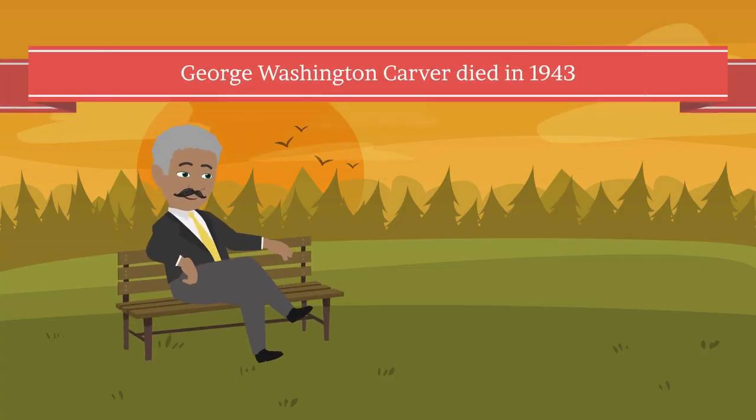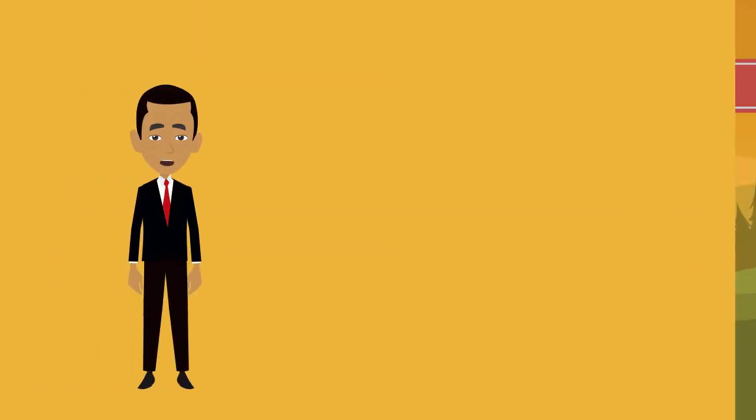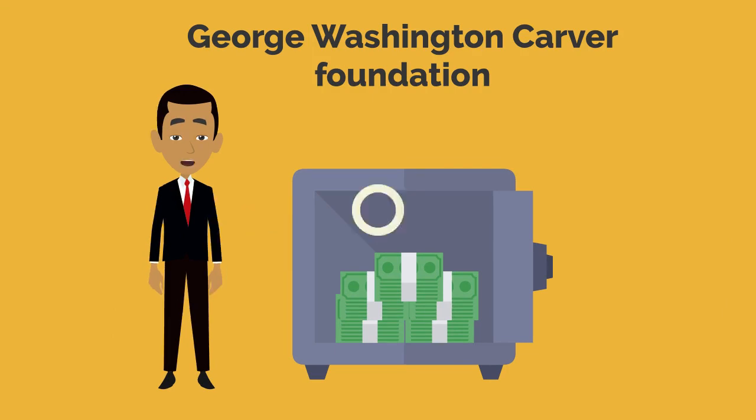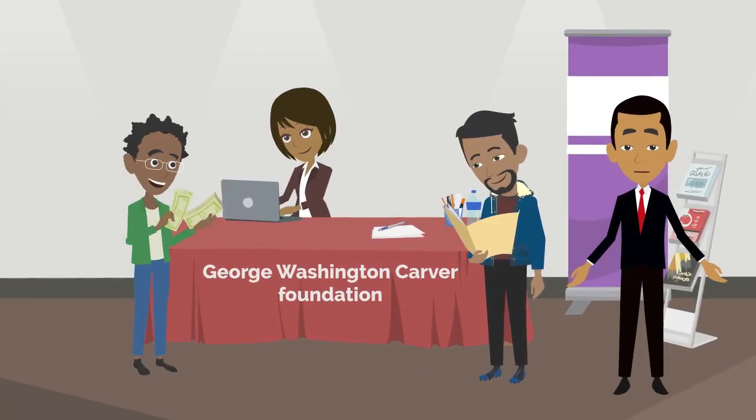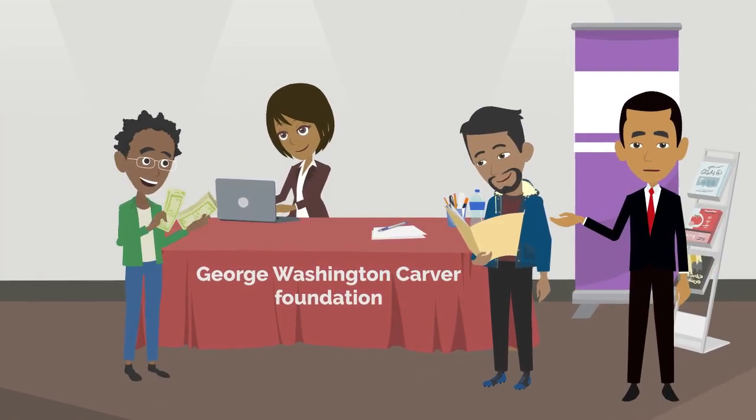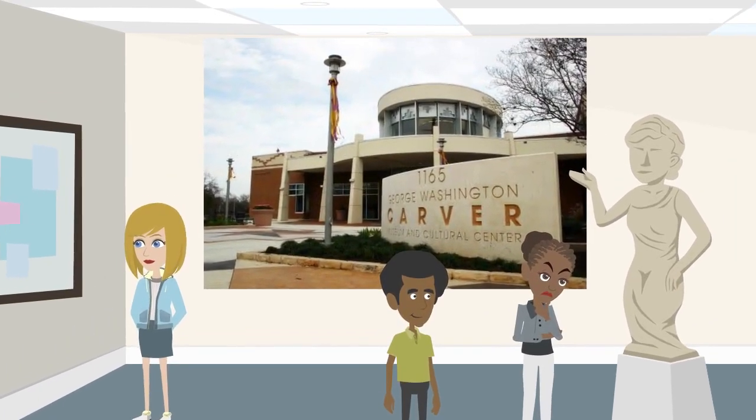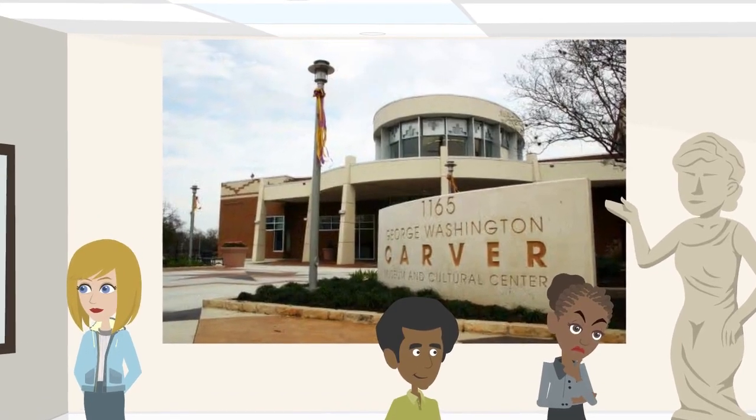George Washington Carver died in 1943. He left his savings to establish the George Washington Carver Foundation. The foundation provides scholarships to students to continue with George Washington Carver's work. The George Washington Carver Museum is on the campus of Tuskegee Institute in Alabama.